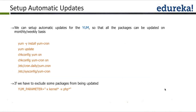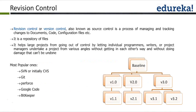If you need to exclude certain packages from being updated, you can use the yum parameter -x, for example: -x kernel -x php. In this case, any kernel or PHP upgrades will be excluded. The -x flag is used to exclude packages. Follow these commands and automatic updates will be handled.